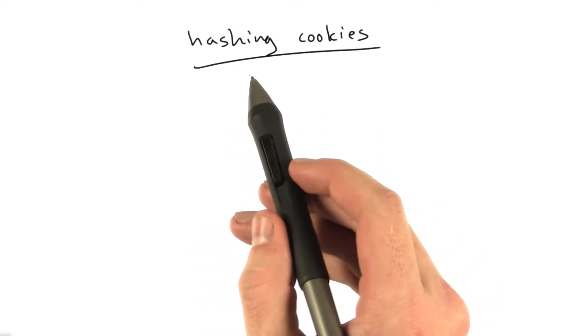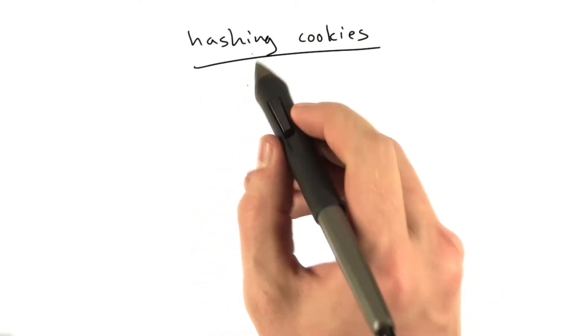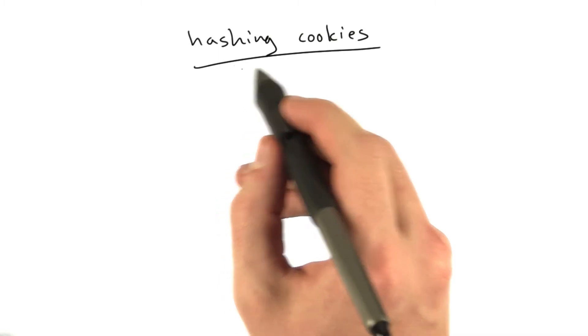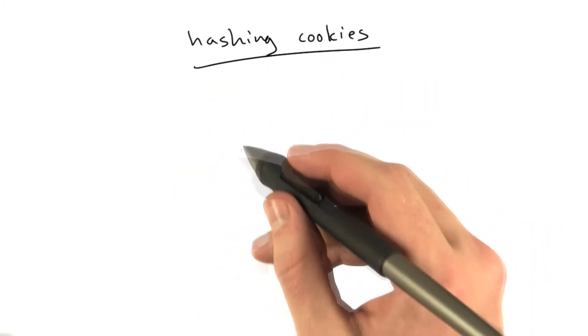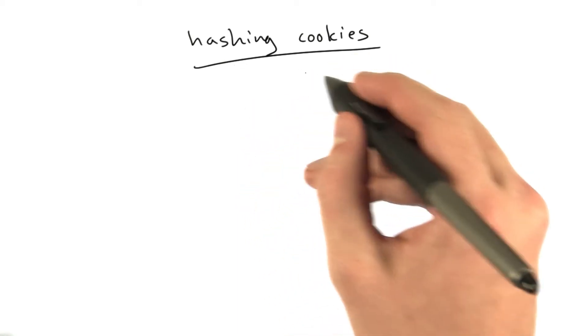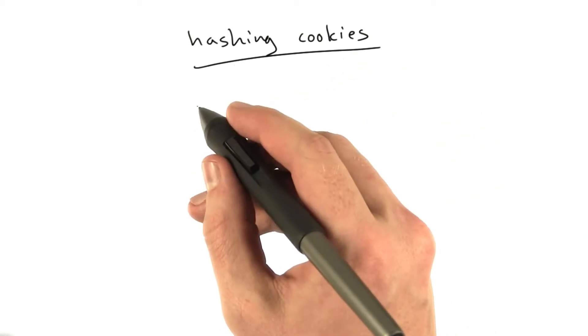So we've got this new technique that we just learned of how to hash things, and we're going to use this in our cookie to prevent people from cheating. Remember we had that example where it kept a count, and we want to use hashing to verify that that count is valid.